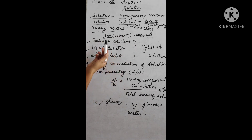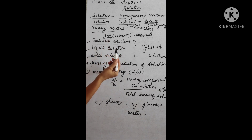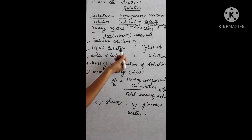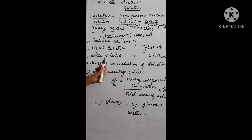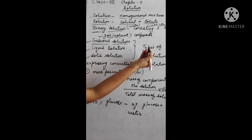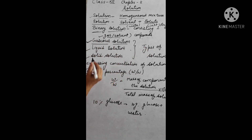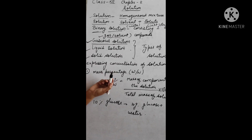Examples of gaseous solutions: gas in gas — the atmosphere. Liquid in gas — chloroform mixed in nitrogen gas, where liquid chloroform is the solute and nitrogen gas is the solvent. Solid in gas — camphor (kapoor) in nitrogen gas, which easily forms a gaseous solution. So in gaseous solutions, gas is the solvent and gas, solid, or liquid can be the solute.